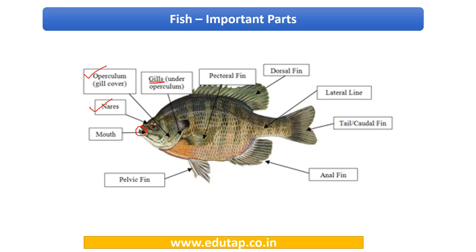Then coming to fins — based on their location, there are various names given. The one at the ventral side is called the pelvic fin, then at the side it is the pectoral fin, and on the dorsal side it is the dorsal fin. Then there is the lateral line. At the end you have a tail, also called the caudal fin. At the ventral lower portion there is the anal fin.